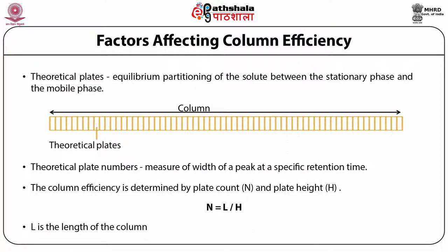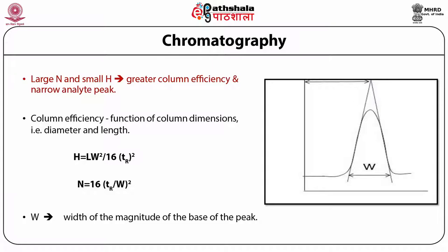Factors affecting column efficiency: Martin and Sinch suggested a theoretical model of chromatography which divided chromatographic columns into theoretical plates and plate numbers. Theoretical plates represent equilibrium partitioning of solute between stationary and mobile phase, while the theoretical plate number is an indirect measure of the width of a peak at a specific retention time. Column efficiency is determined by plate number n and plate height h: n = L/H, where L is the length of the column. Large n and small h represent greater column efficiency and a narrower analyte peak.